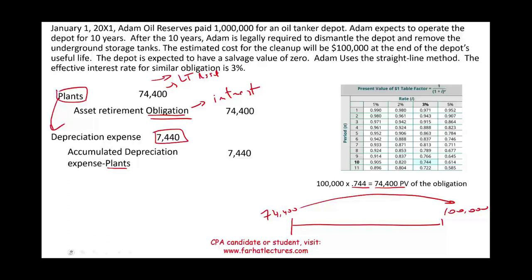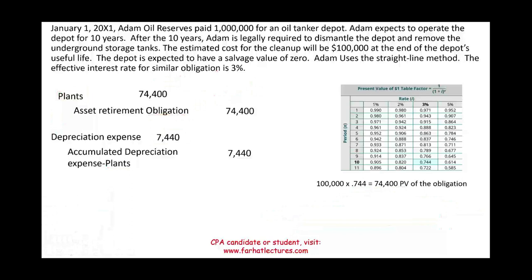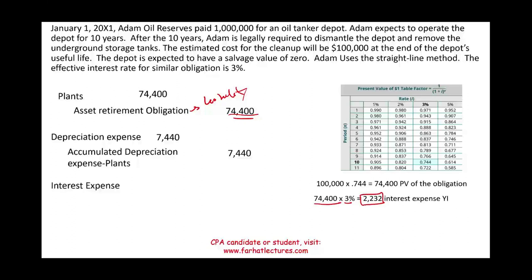We also have an obligation that requires interest. Every year we record interest expense on the asset retirement obligation because it is a long-term liability. For year one, we take $74,400 — the book value of the liability — times 3%, giving us interest expense of $2,232. We debit interest expense $2,232 and credit asset retirement obligation $2,232, increasing our obligation. We are not paying anything yet.